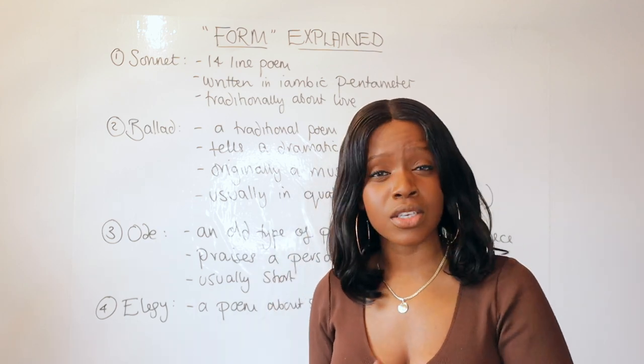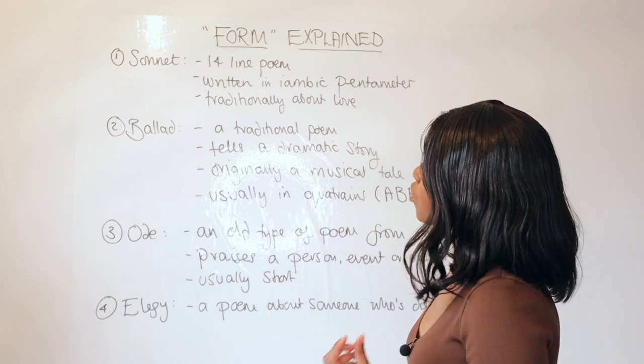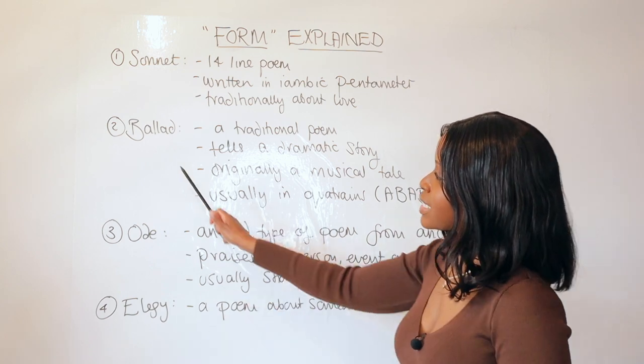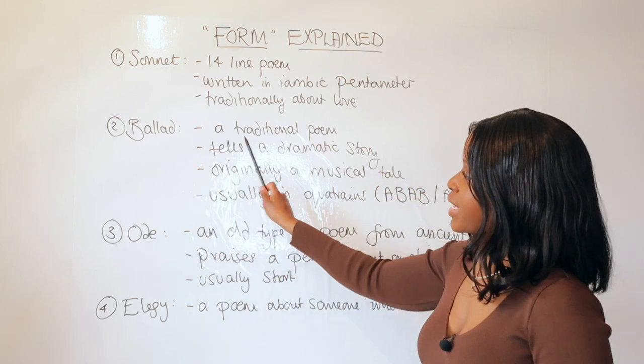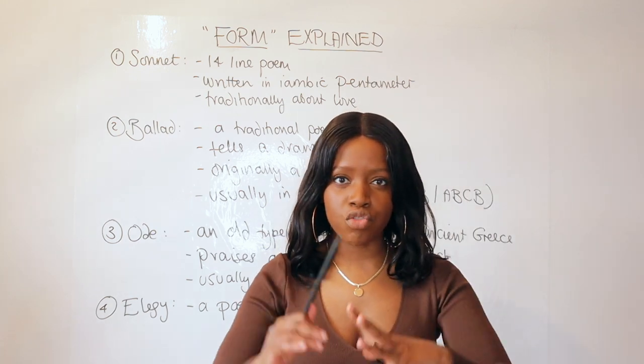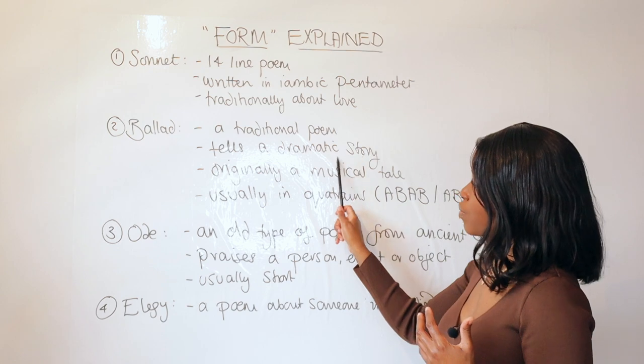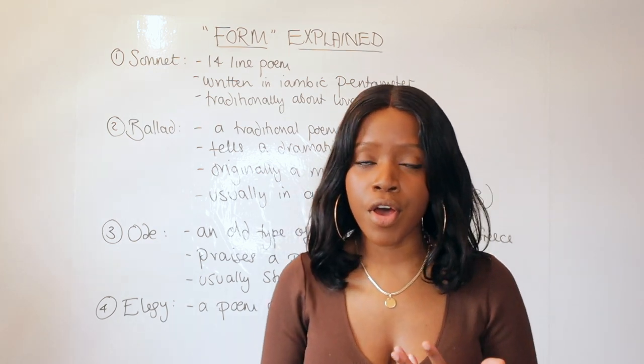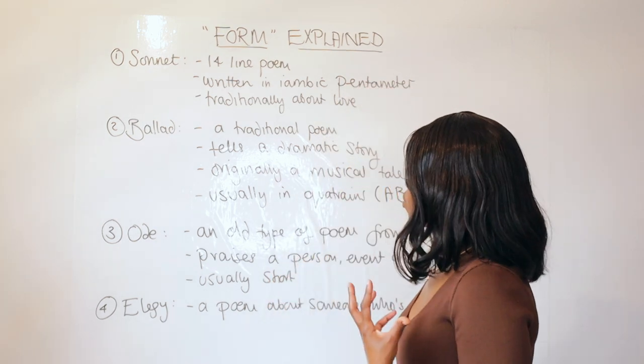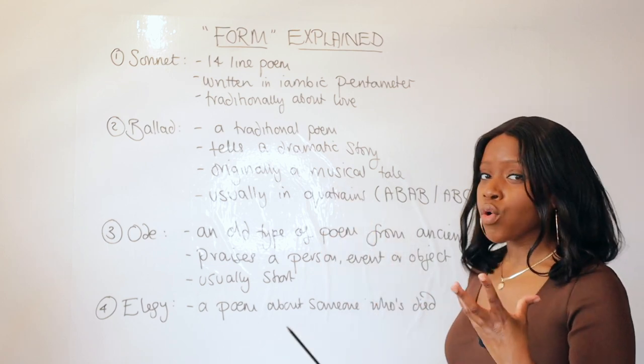The next form to be aware of is a ballad. What a ballad is is a traditional type of poem which tells a very dramatic story. A ballad must always have a dramatic story included within the poem. It was originally—so it's a very old style of poem.